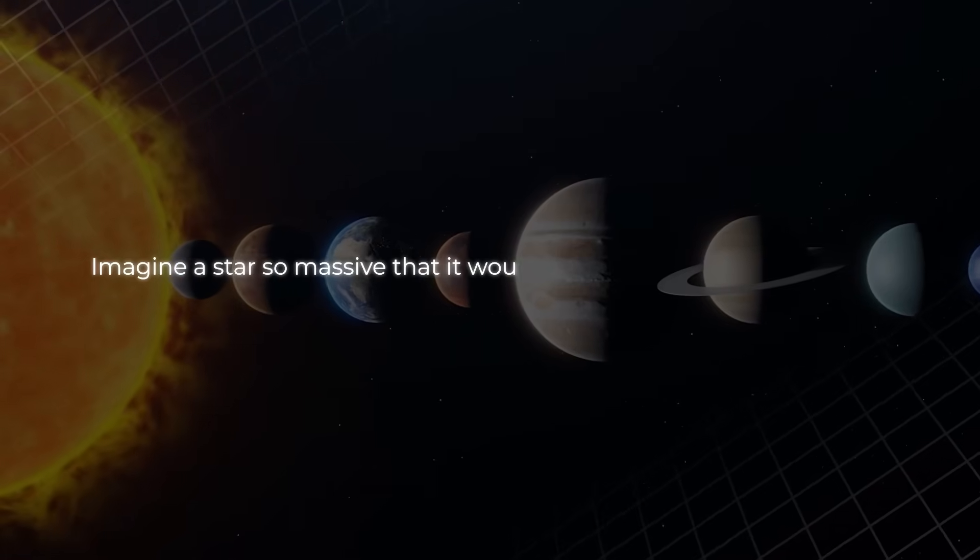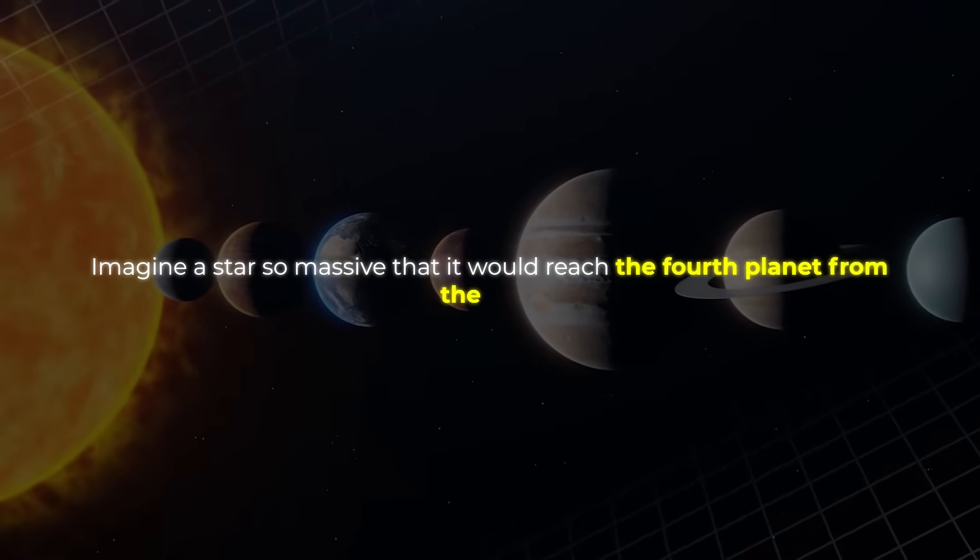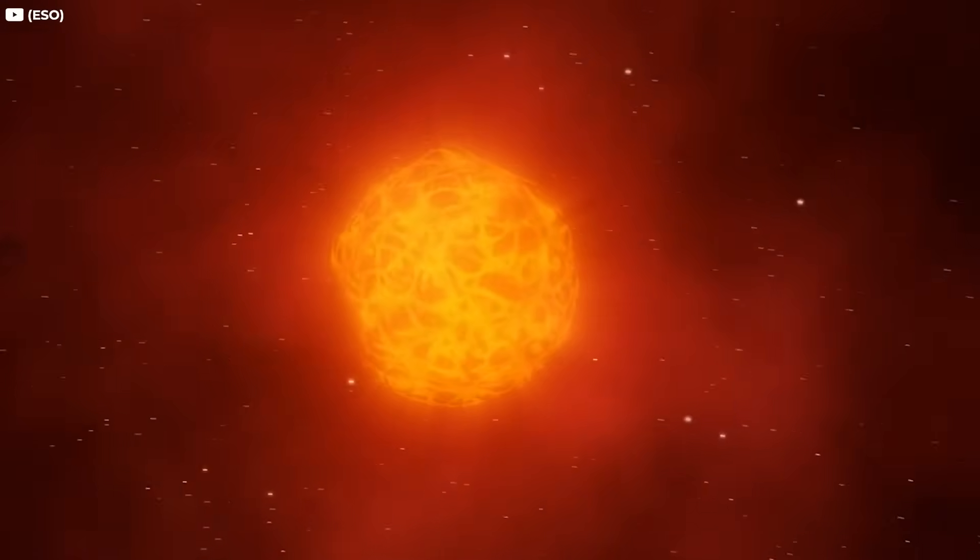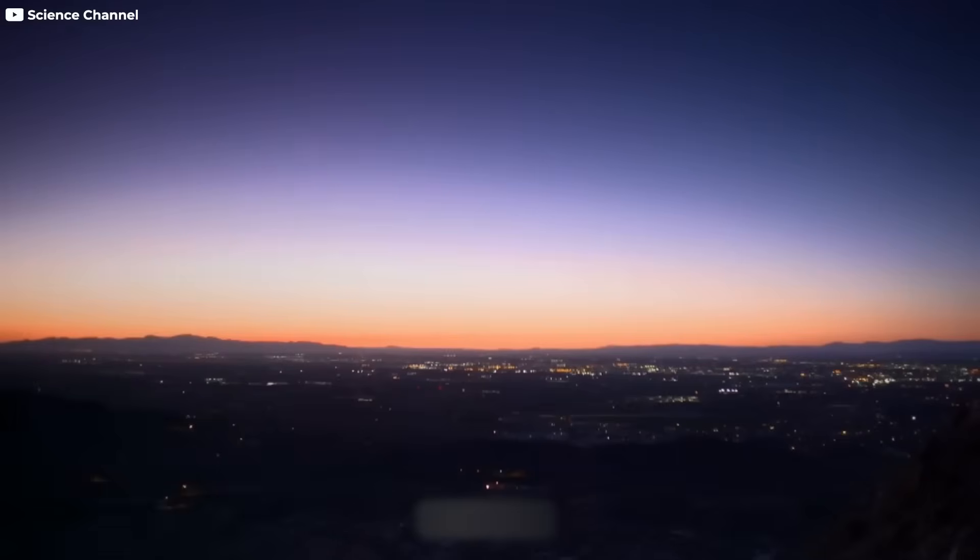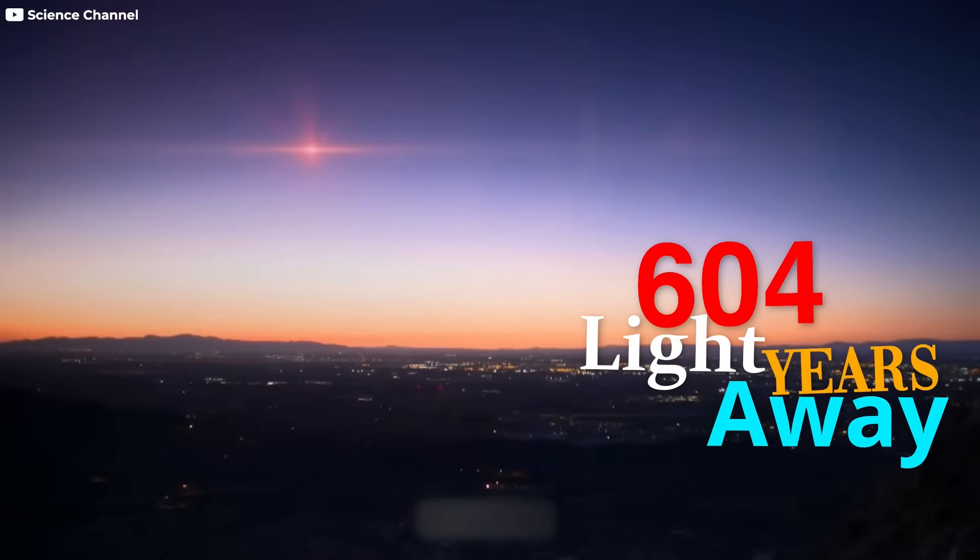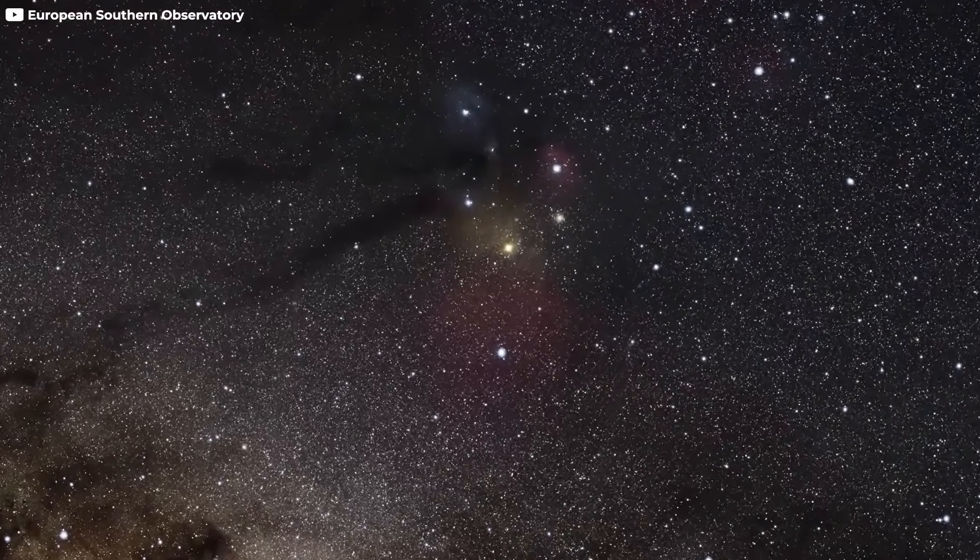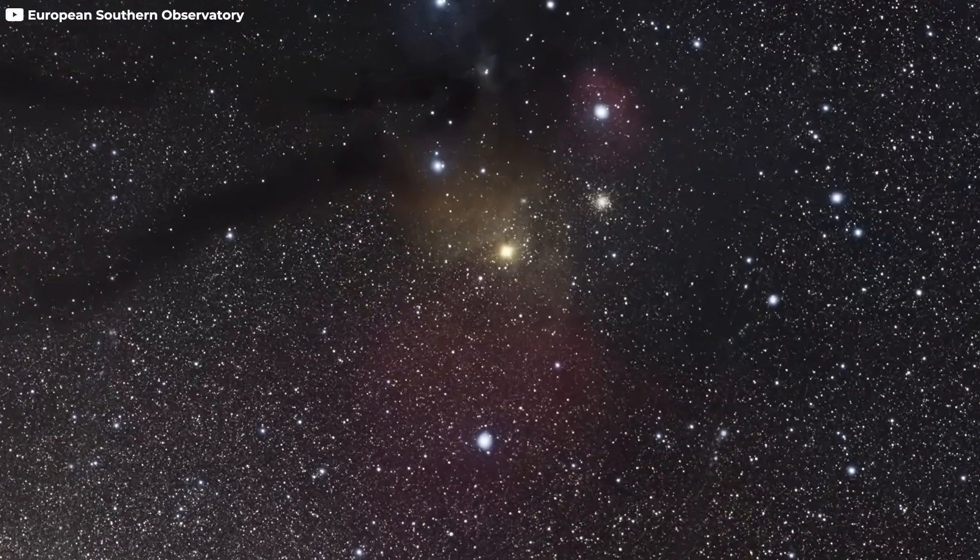Imagine a star so massive that it would reach the fourth planet from the sun. Its size alone is enough to evoke awe, but there's more to this star than just its scale. Antares sits approximately 604 light-years away from Earth, making it relatively close in cosmic terms, especially for a star of such enormity.